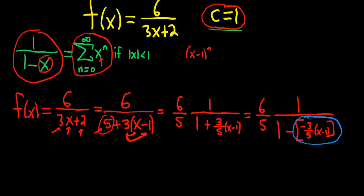So now we apply the formula. This is equal to 6 fifths, infinite sum, as n runs from 0 to infinity of that whole piece to the nth power. So negative 3 over 5, x minus 1 to the nth power.